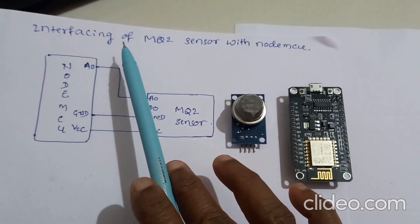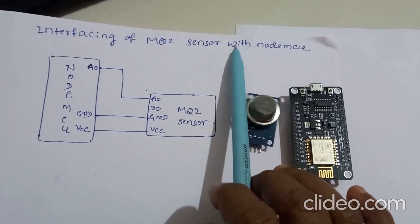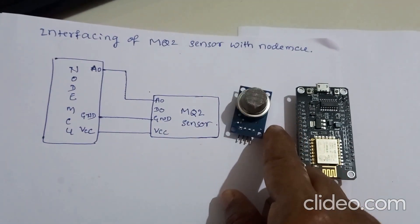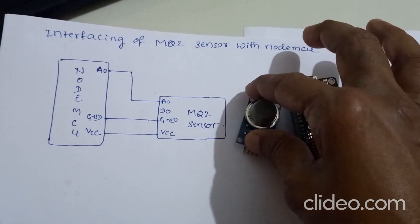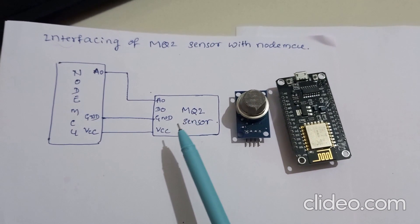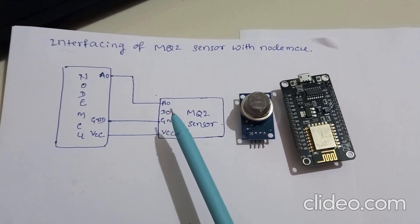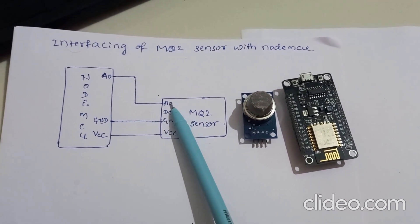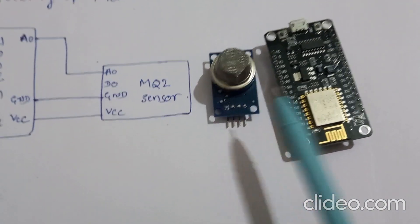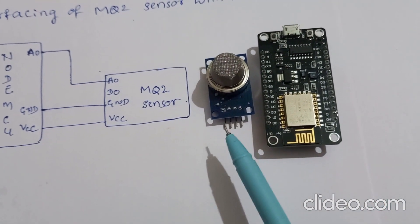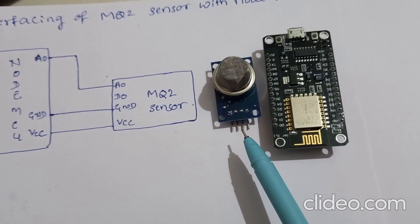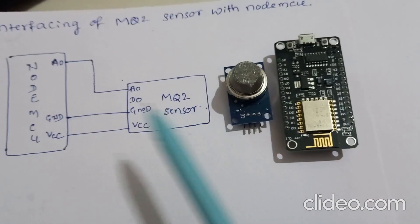In this experiment, we are interfacing the MQ2 gas sensor with NodeMCU. There are four pins on the MQ2 gas sensor: VCC, ground, D0 (digital pin), and A0 (analog pin). If you hold the MQ2 sensor in this manner, the first pin is VCC, the next one is ground, the next is the digital pin, and the last one is the A0 pin.